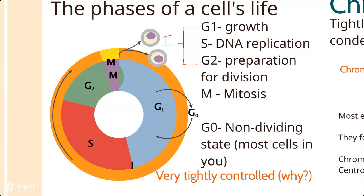In the G2 phase there's more growth and metabolic activity, but the cell is also preparing for division - like a dress rehearsal. The organelles duplicate themselves in this second growth phase. The mitochondria do their own version of cell division independently. The mitochondria and chloroplasts copy themselves, and other organelles get bigger and divide as well.